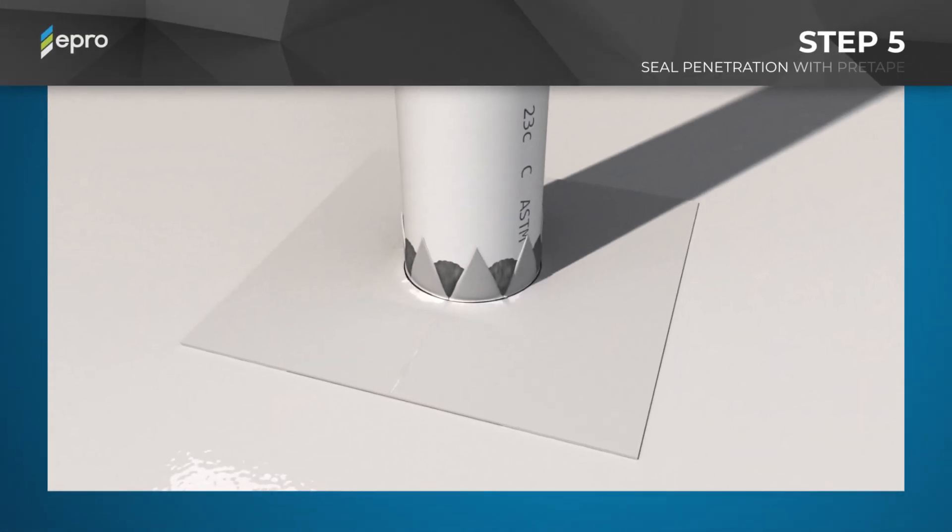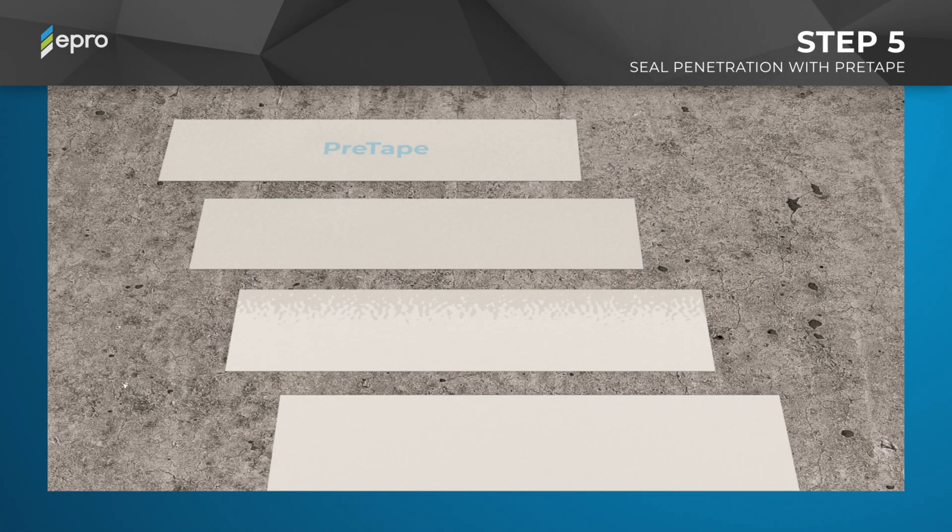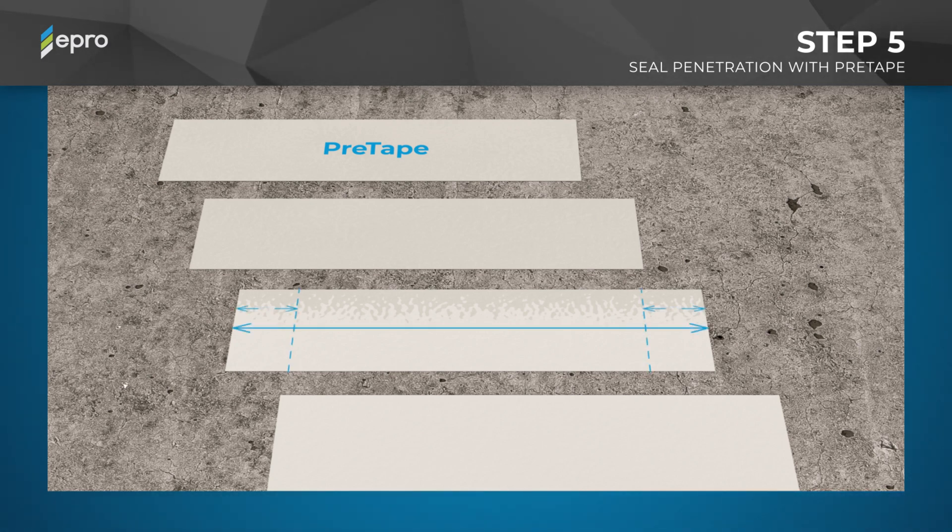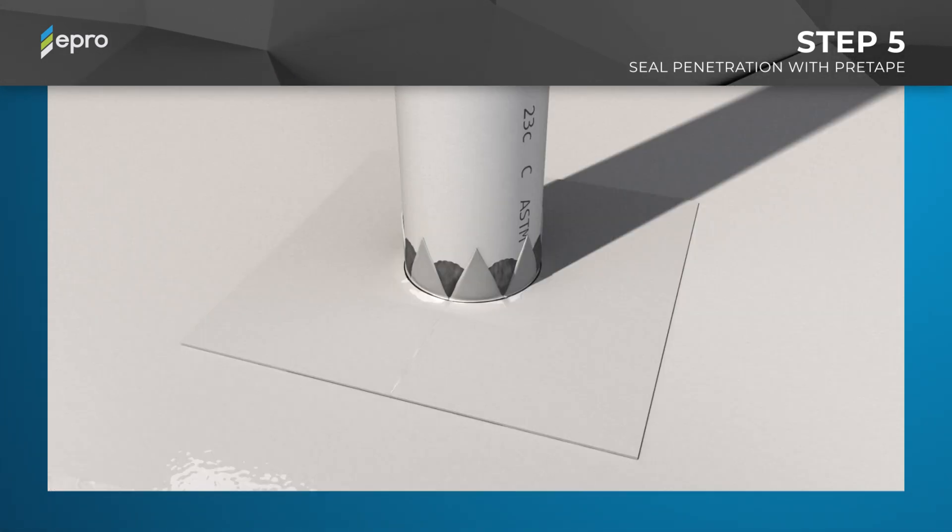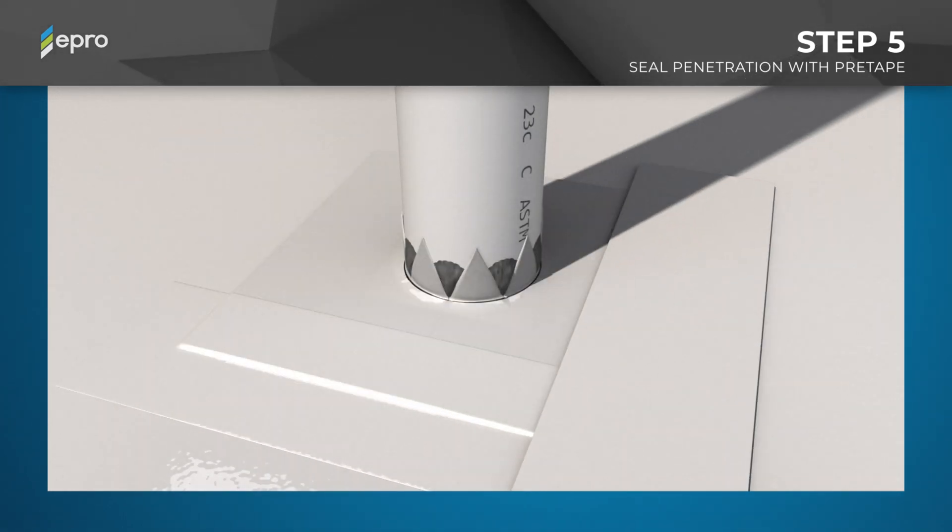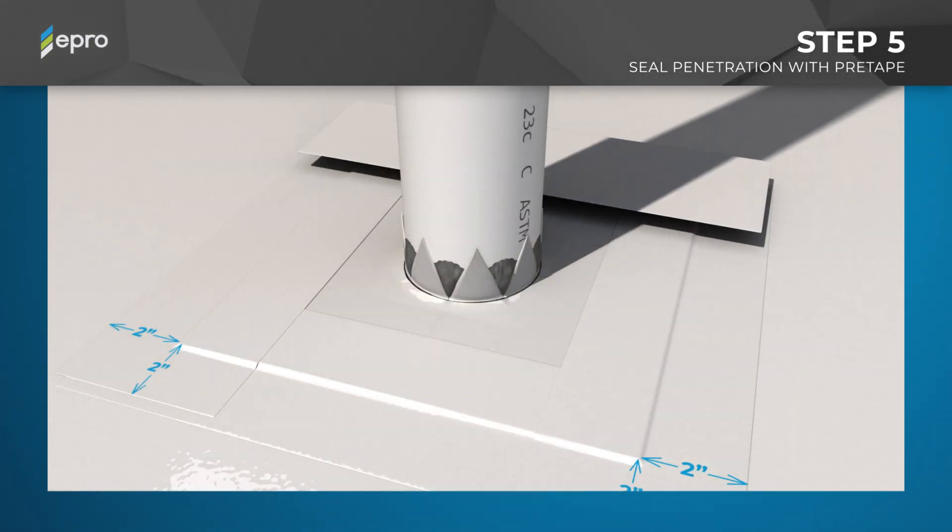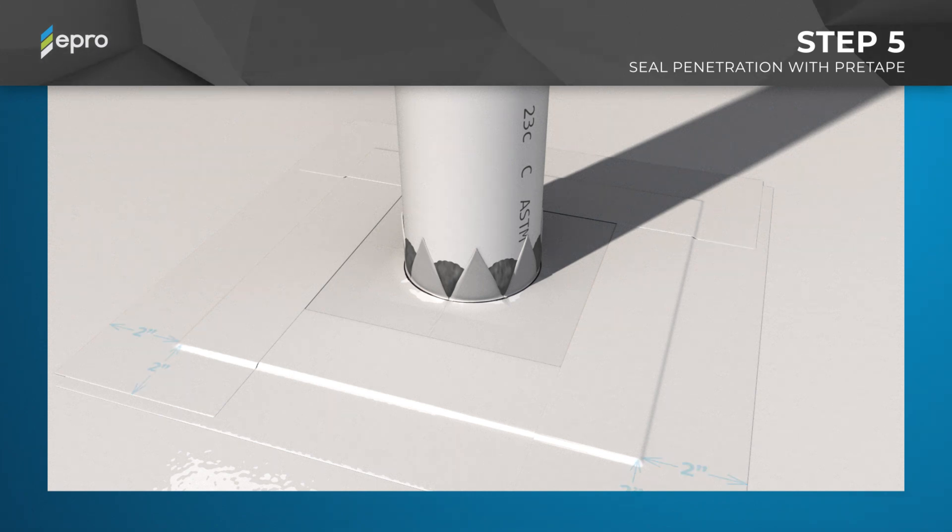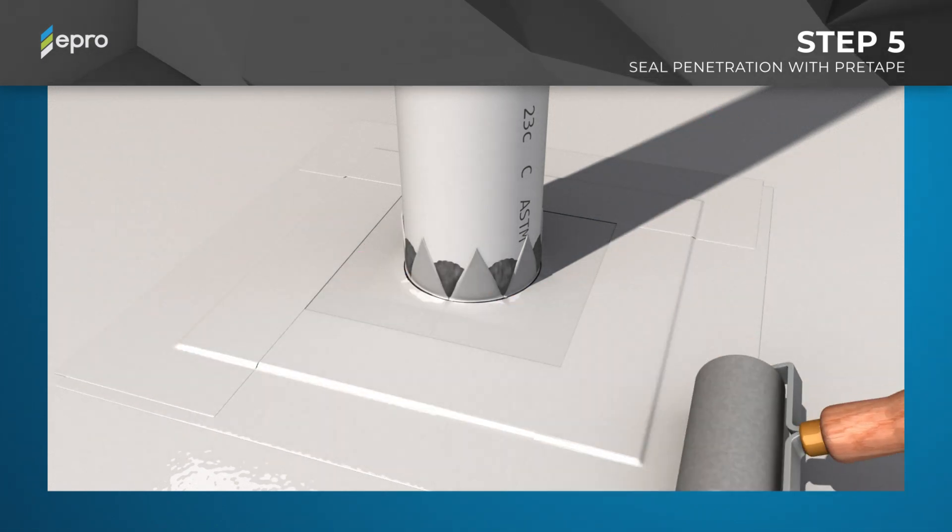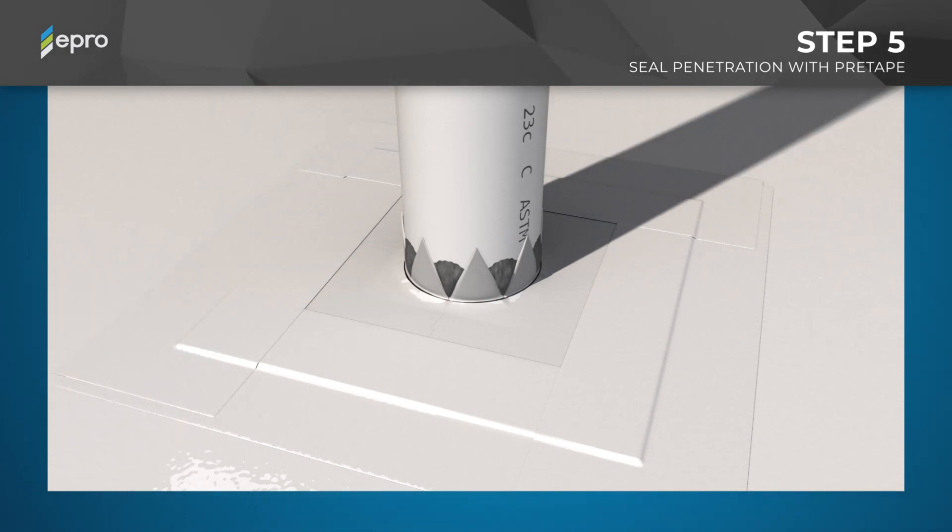Step 5: Seal the penetration detail. Seal the outside edges of the target sheet to the PRETAC base sheet with PRETAPE single-sided tape by cutting each piece of PRETAPE long enough to extend 2 inches past each edge of the target sheet. The pieces are 16 inches long in this example. Then, apply the PRETAPE to seal the outer perimeter of the target sheet by removing the PRETAPE release liner and adhering it centered over the edge of the target sheet while making sure each piece extends 2 inches past each corner and onto the PRETAC base sheet. After the PRETAPE is applied, use a heavy seam roller to firmly seal along the perimeter edges of the target sheet.